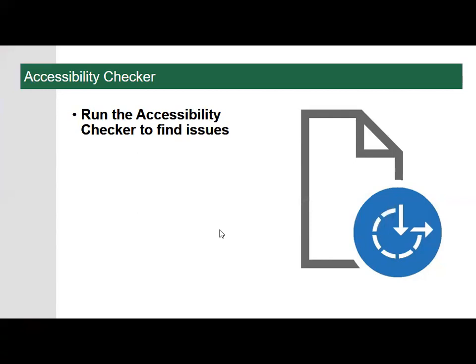The accessibility checker tool finds accessibility issues in your Word documents, PowerPoint presentations, Excel spreadsheets, and Outlook on the web emails. The tool generates a report of issues that could make your content difficult for people with disabilities to understand. It explains why you should fix these issues and walks you through how to fix them.